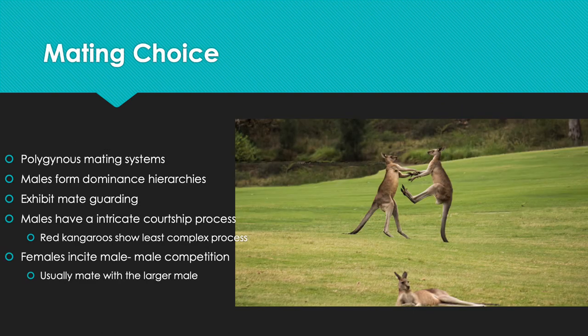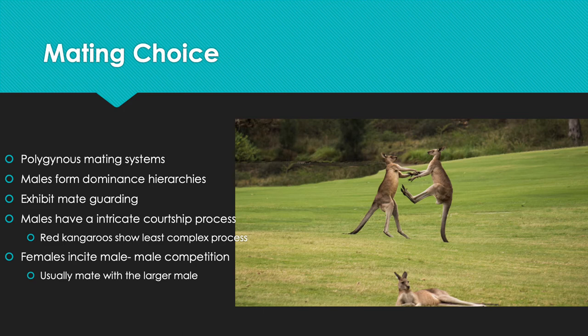Kangaroos have a polygamous mating system, meaning one male mates with multiple females. That male is usually the strongest with the most reproductive success. The male approaches the female, sniffs her cloacal region, and occasionally her pouch opening. Younger, mid-sized males may be aggressively rejected, but with dominant males the female usually just moves away if unreceptive. It is rare for a male to touch or grasp an uninterested female.